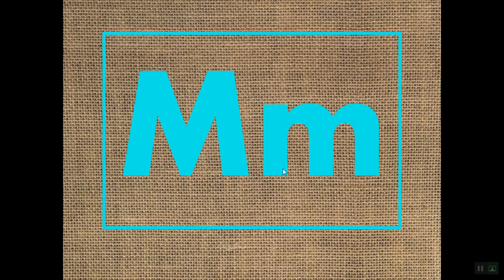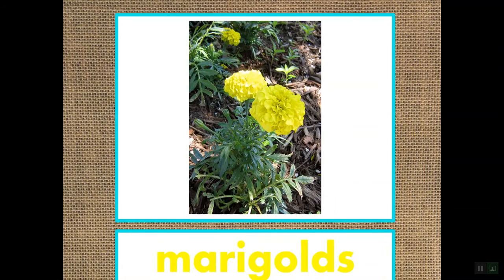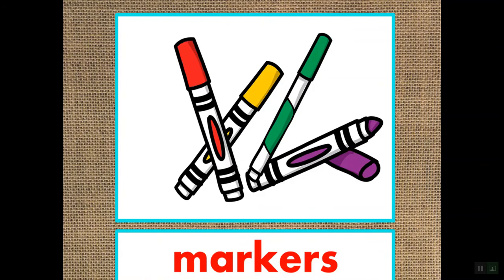Check out your capital M and your lowercase m one more time. Let's get into this list of 12 words. The first one is marbles. Can you say marbles? Marbles starts with the sound mmm and the letter M. Can you say marigolds? This is a type of flower which starts with the sound mmm and the letter M. Next, we have markers. Say markers. Markers are something that we use at school all the time, and that starts with the sound mmm.